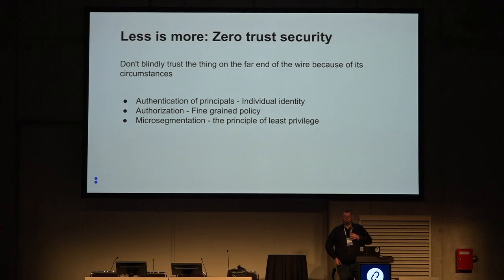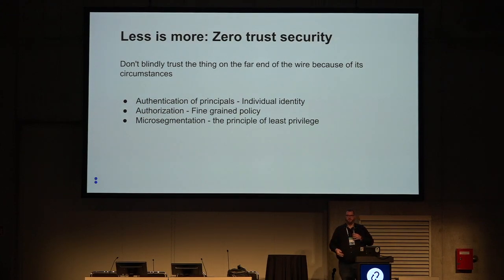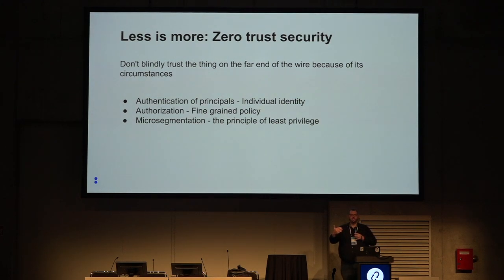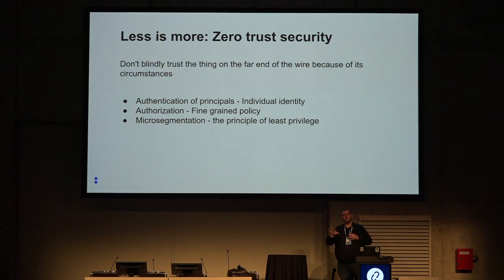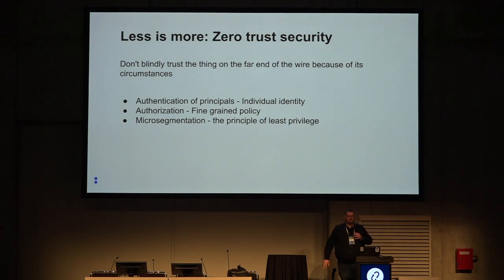Zero trust security is really a 'less is more' concept. By having a situation where you can provide a secure, attestable identity — where you can provide a policy — where you can provide all the things needed to allow your services to communicate, you can provide those things on a self-service and dynamic basis. This means we can get rid of some of the physical network overhead and policy overhead, and do business faster, smarter, and more securely. The three things I'll touch on are authentication, authorization, and micro-segmentation.